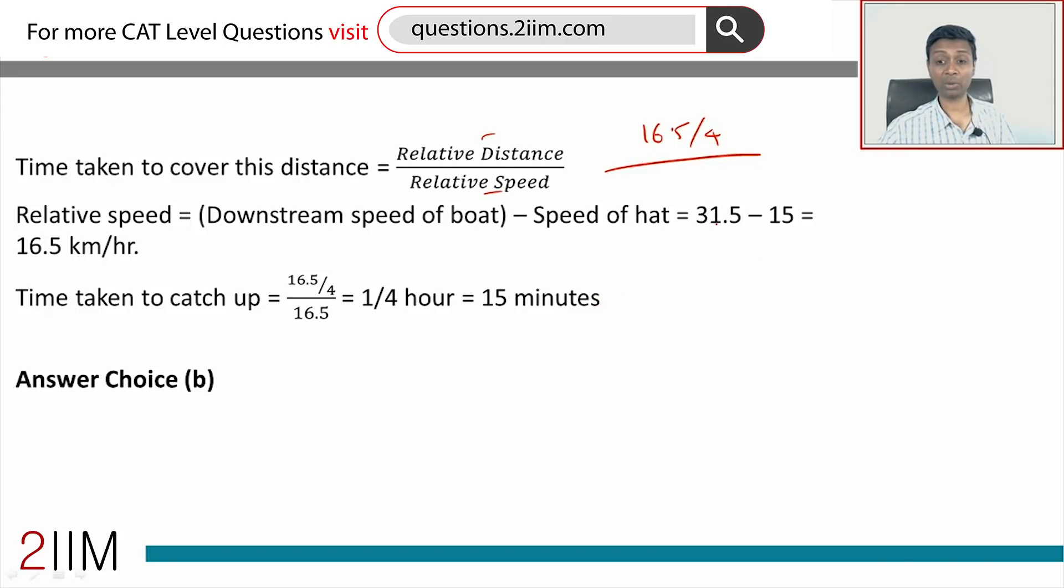Downstream speed of the boat is 31.5, which we already calculated, minus 15, which is speed of the water. This is 16.5 miles per hour. The distance between them, the time it will take is one-fourth of an hour or 15 minutes.